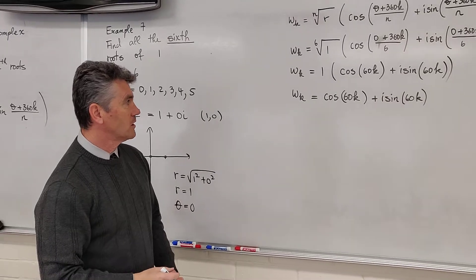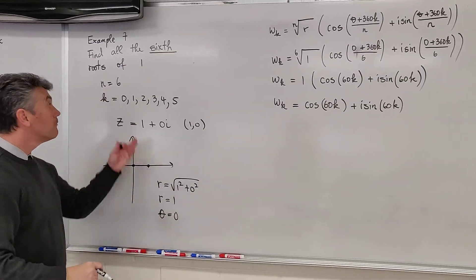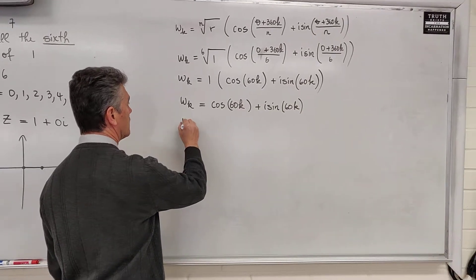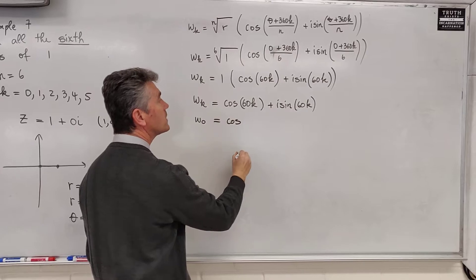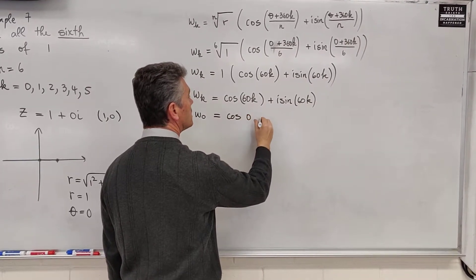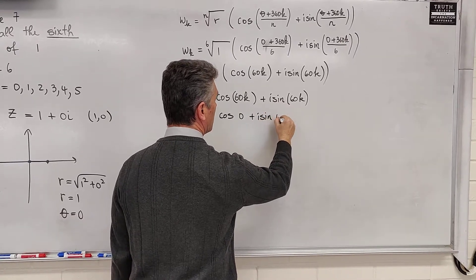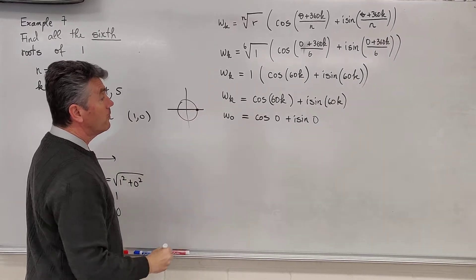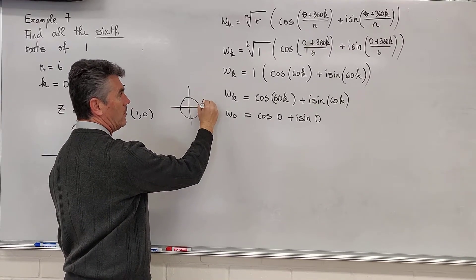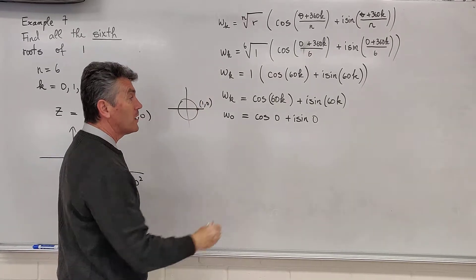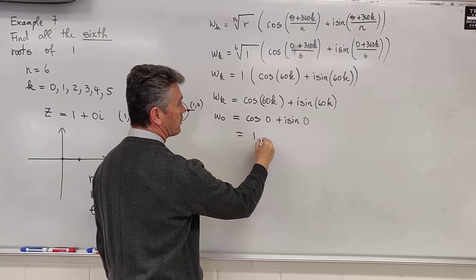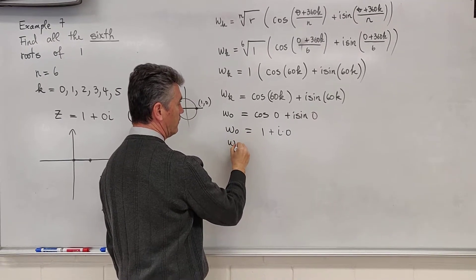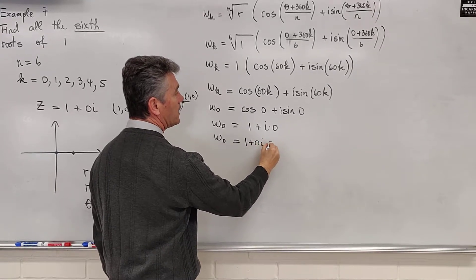Now we find the 6 roots by replacing k with 0, 1, 2, 3, 4, and 5. w sub 0 is equal to cosine of (60 times 0) plus i sine of 0. Drawing the unit circle, the terminal side of the 0-degree angle intersects at (1, 0), so cosine of 0 is 1 and sine of 0 is 0. Therefore w sub 0 equals 1 plus 0i, or just 1.